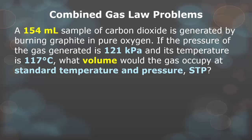The next couple of questions we are not going to be telling you the answers to. You have to solve these on your own and show us in class so we can check your work. Please use the formula we just gave you. Looking at this problem using the combined gas laws, you have a 154 milliliter sample of carbon dioxide gas generated by burning graphite, which is carbon, in a sample of pure oxygen.